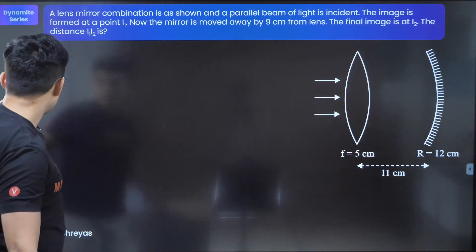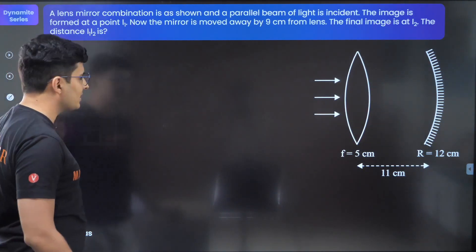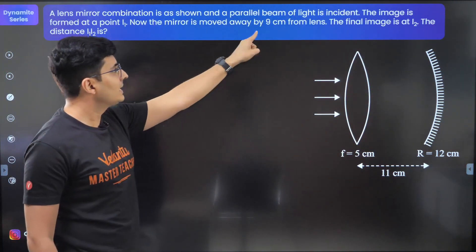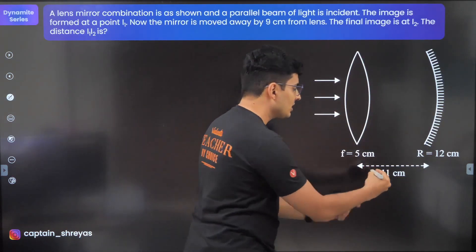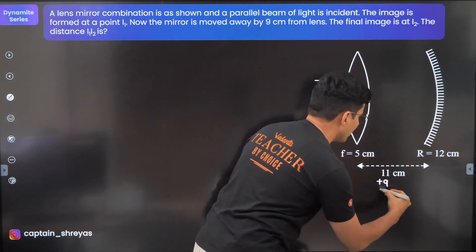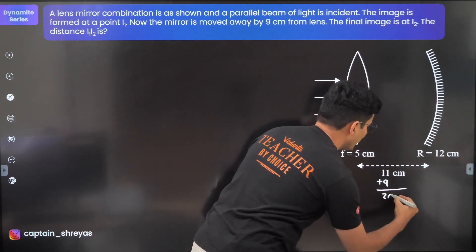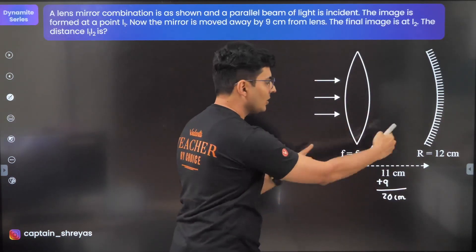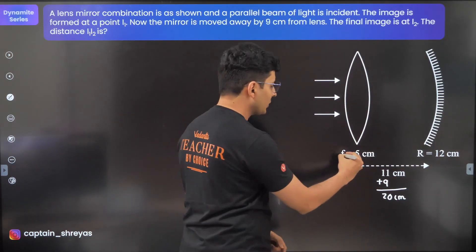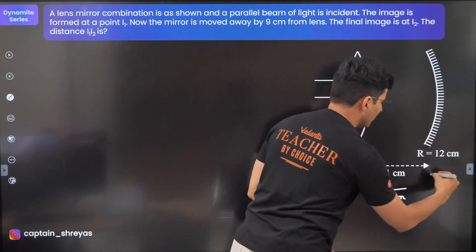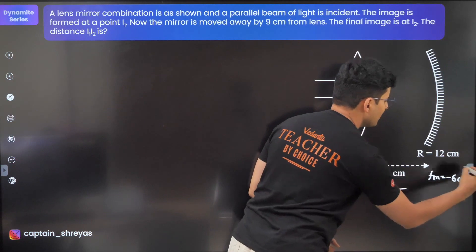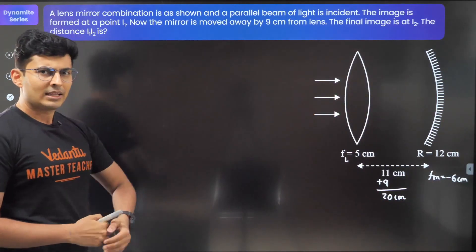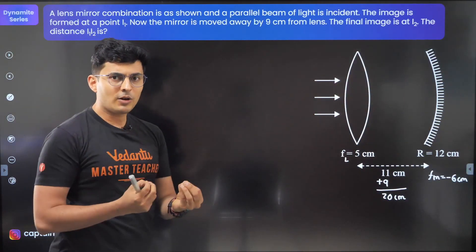Now observe the second half. I'll draw a fresh diagram, but this time the distance will be obviously different because you're moving it by 9 centimeters further away from the lens. This will be 11 centimeters plus 9, which is 20 centimeters. This is the focal length of the lens, and the focal length of the mirror is still minus 6 centimeters.